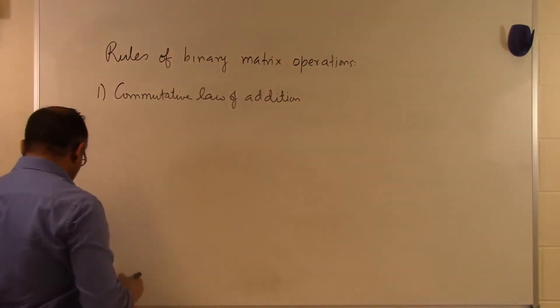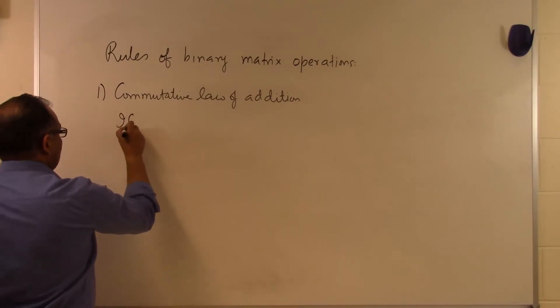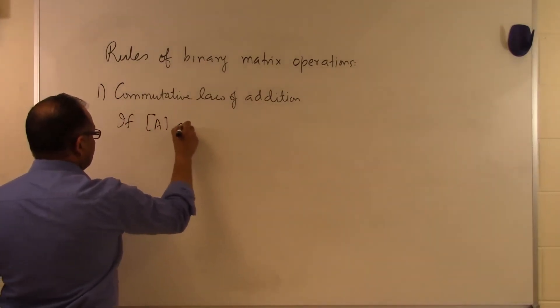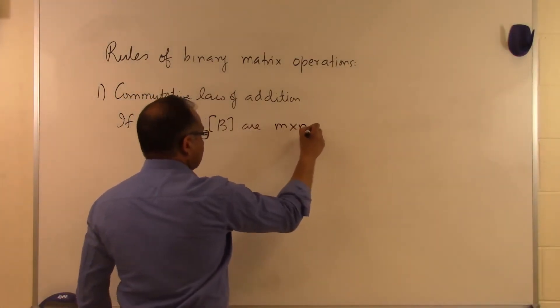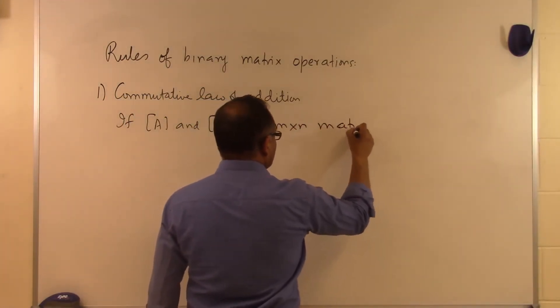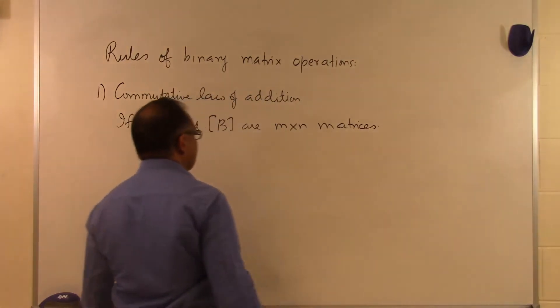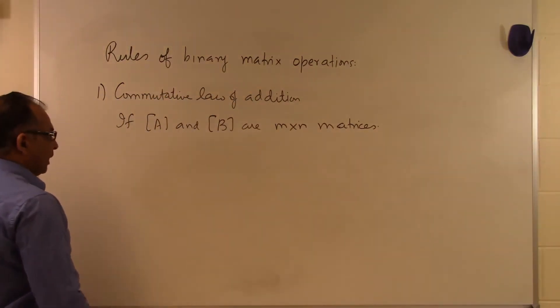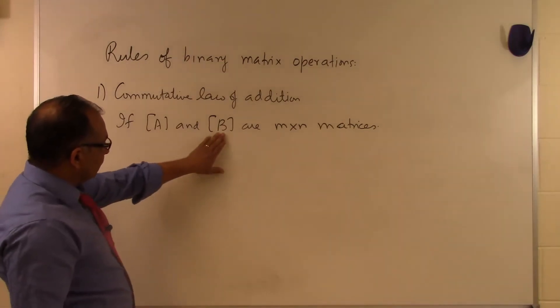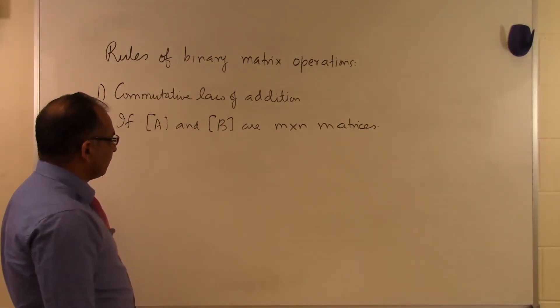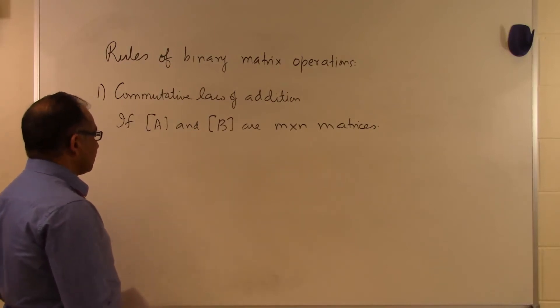What this means is that if A and B are m by n matrices, they are of size m by n. So if you have A matrix which is size m by n and B is of size m by n, then of course the addition is defined.